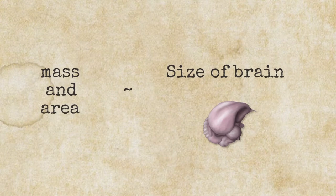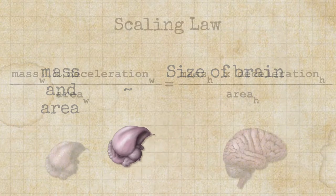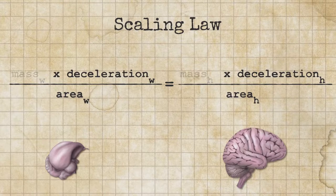We can simplify this somewhat by saying that both the mass and the area depend on the size of the brain. So the mass depends on how big the brain is, the volume, and that goes as the radius cubed, and the area goes as the radius squared.